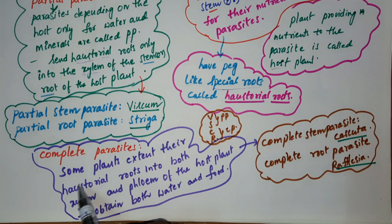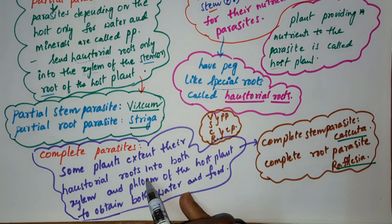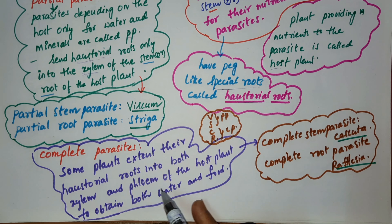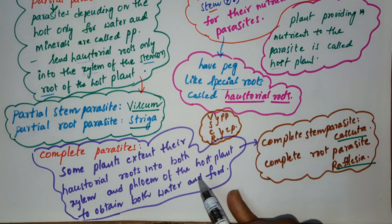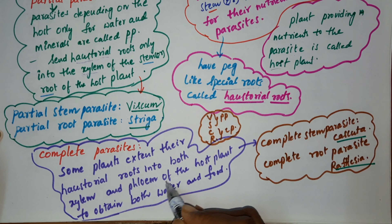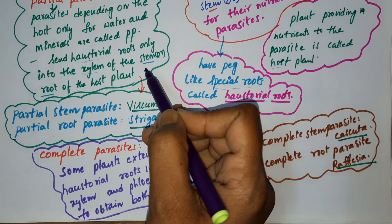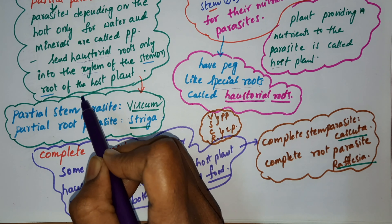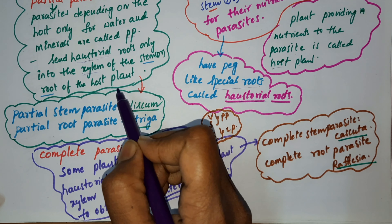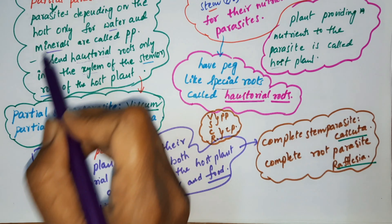Complete parasites: some plants extend their haustorial roots into both xylem and phloem of the host plant to obtain both water and food. Partial parasites take only water and minerals from the host plant.